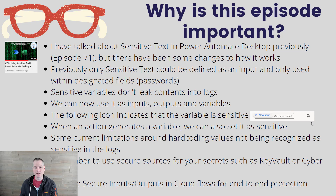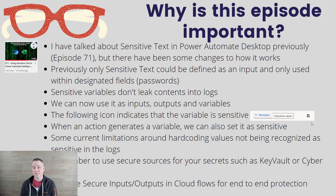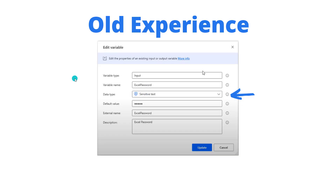There are some limitations around hard-coding values directly in your desktop flow. If you designate a variable as sensitive and then hard-code a value in it, you still see it as the input. As I'll mention later, that's an anti-pattern — you should always be retrieving your secrets and sensitive information from secure sources such as Key Vault or CyberArk. From a cloud flow perspective, you also want to use the secure inputs and secure outputs feature to ensure end-to-end obfuscation.